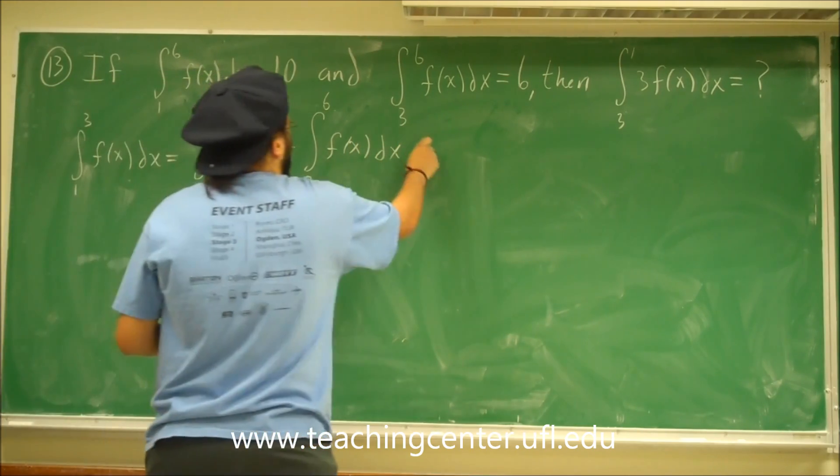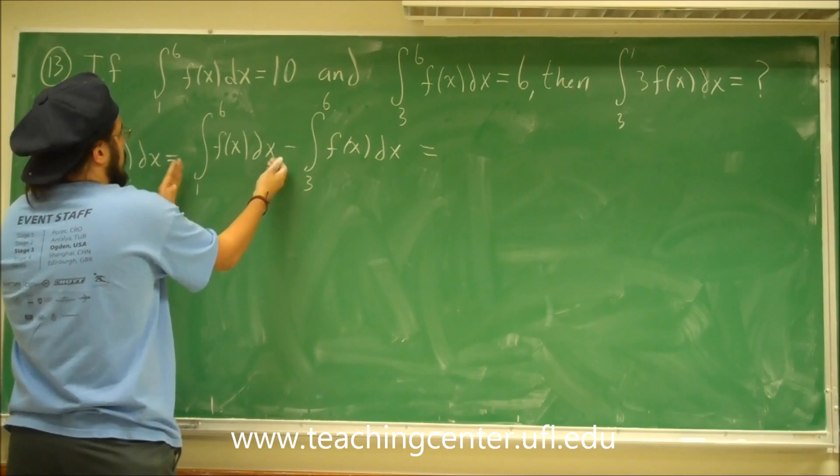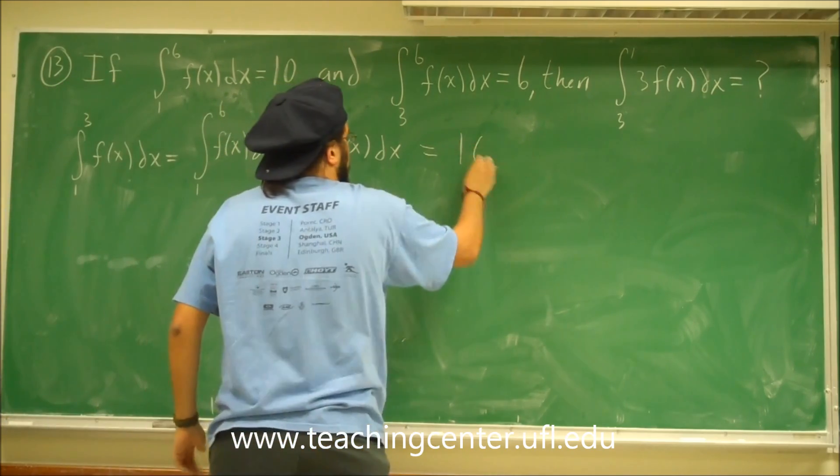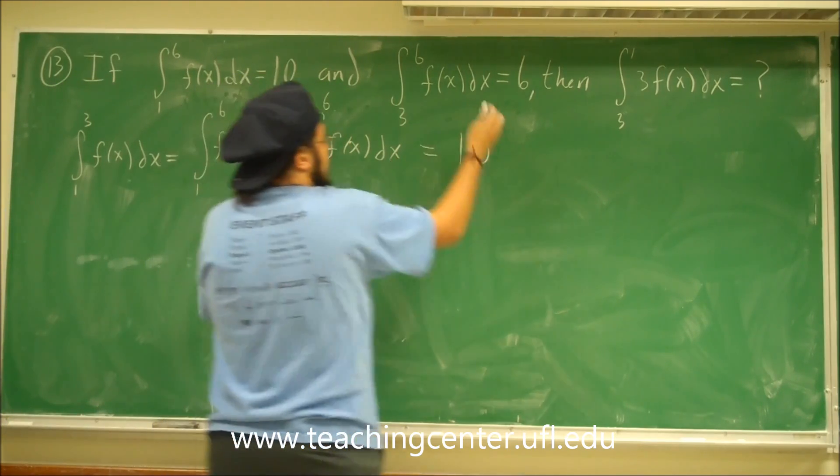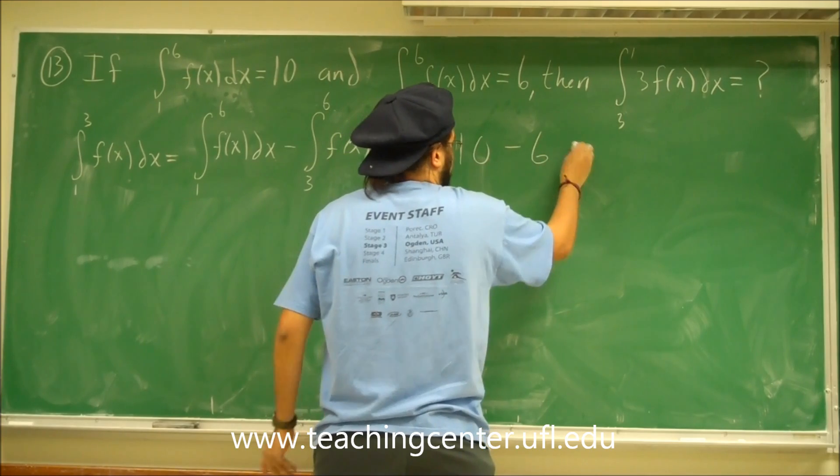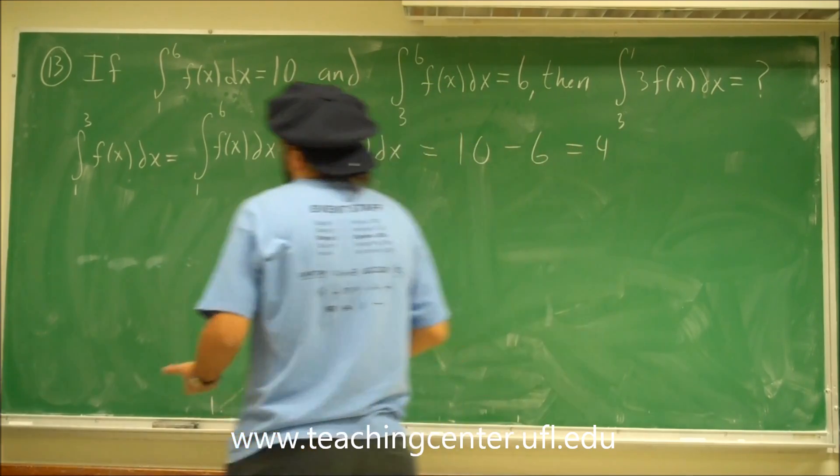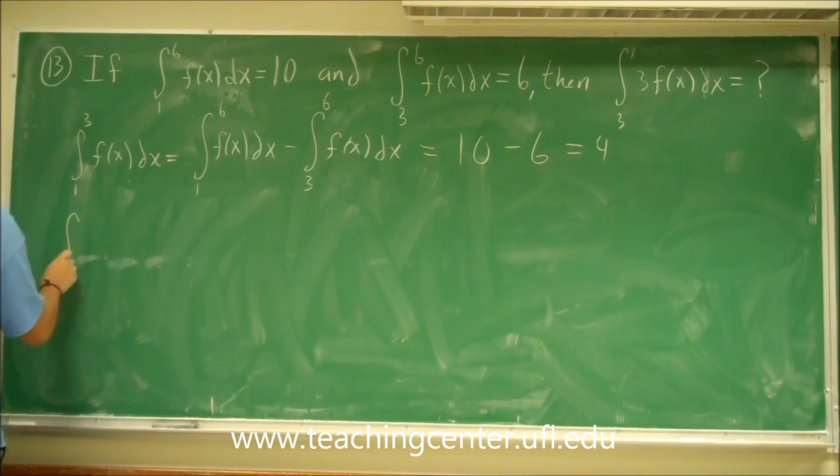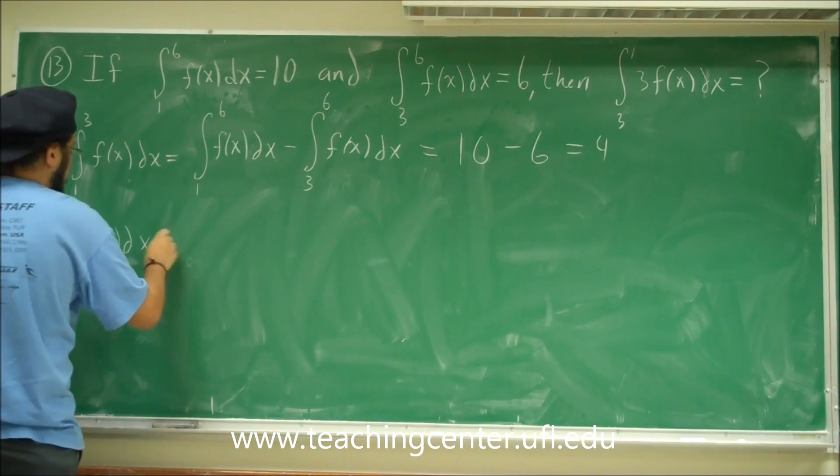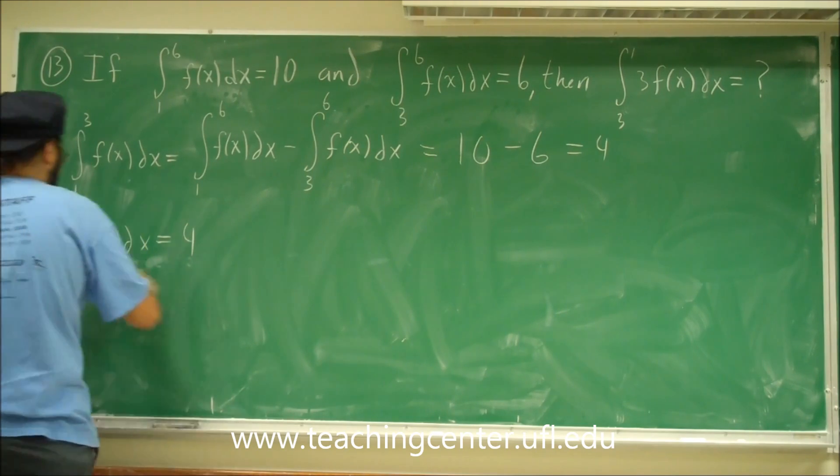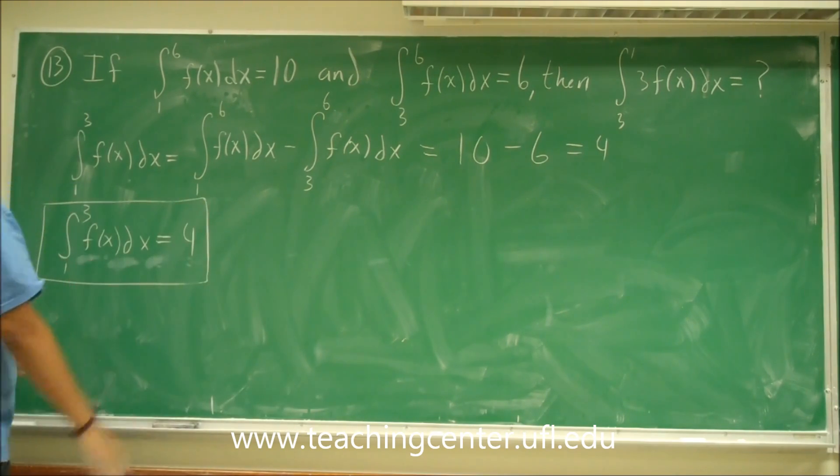Okay, so this whole integral is 10, and this whole integral is 6, so we get 10 minus 6 and that's 4. Okay, so now we have that. The integral from 1 to 3 f of x dx is equal to 4. Okay, very important. So we have that.